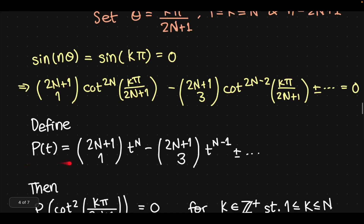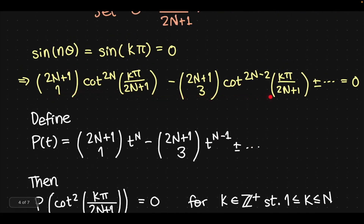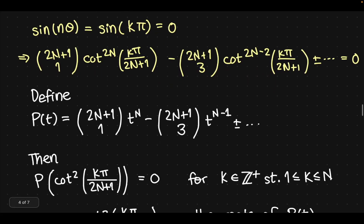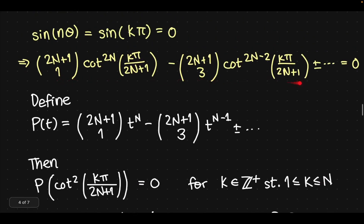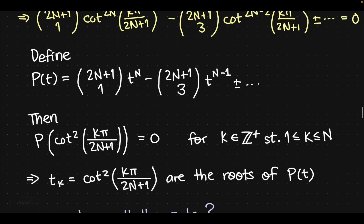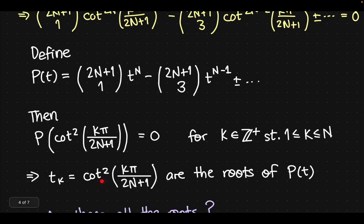So if we define the polynomial P(T) = C(2N+1,1)·T^N − C(2N+1,3)·T^(N-1) + …, then based on that equation, plugging in T = cot²(kπ/(2n+1)) for k between 1 and N inclusive sets the polynomial to zero. That means cot²(kπ/(2n+1)) for k = 1 to N are roots of P(T). Let's call them T_k — there are N roots.